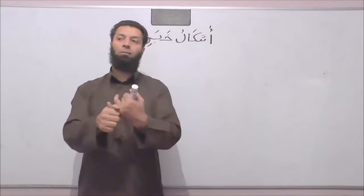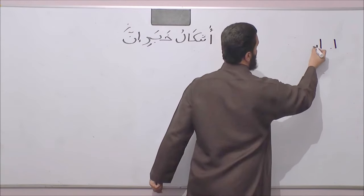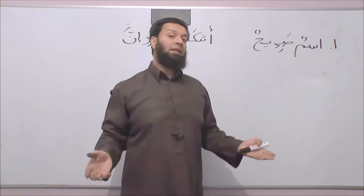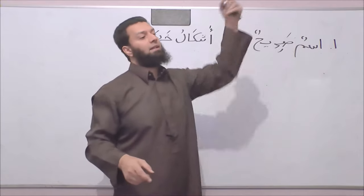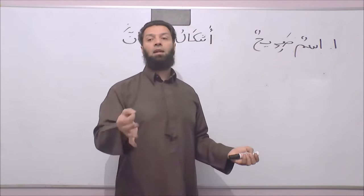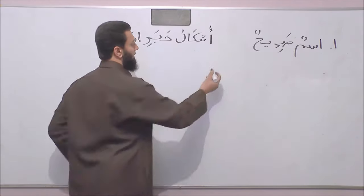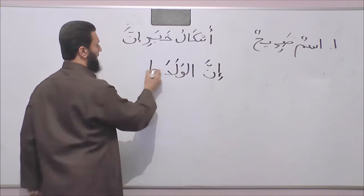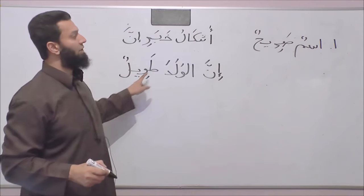We know it can comprise of an اسم which is صريح. So number one, the most common one: اسم صريح. The first type of خبر إنّ is an اسم صريح — it is a noun which is clear. An example: you can say إنّ الوالدَ طويلٌ.